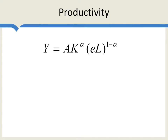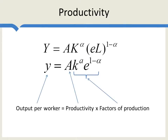We're not going to be thinking about A here so much as a public good, but as productivity. What we want to do is change our interpretation of A a little bit — to think about how well, given the ideas that you have, you combine your capital and labor to produce output. Capital and labor can be combined in less efficient and more efficient ways. A lower A now means lower productivity, a less efficient combination of capital and labor. We can divide both sides by L to get output per worker, which is explained by two factors: productivity, and the factors of production — the capital-labor ratio and human capital.